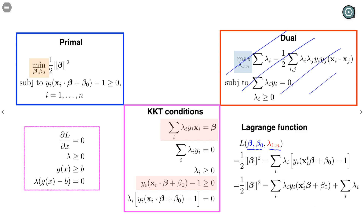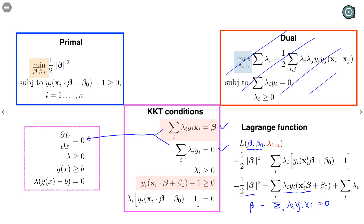Let's work out the KKT conditions. The first condition is the derivative of the Lagrangian with respect to x being zero, where x here refers to the primal arguments beta and beta 0. Taking the derivative with respect to beta, we get beta minus the sum over i of lambda_i * y_i * x_i = 0, giving us the first equality. Taking the derivative with respect to beta 0 gives us the second equation. The remaining three sets of conditions are copied from the general KKT conditions: each lambda_i must be ≥ 0, all constraints must be ≥ 0, and lambda_i and the constraint cannot be non-zero simultaneously.